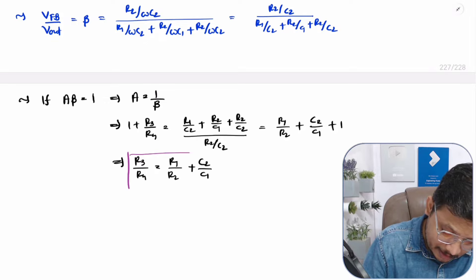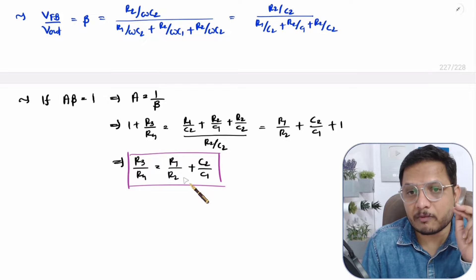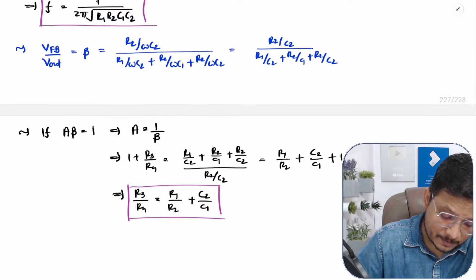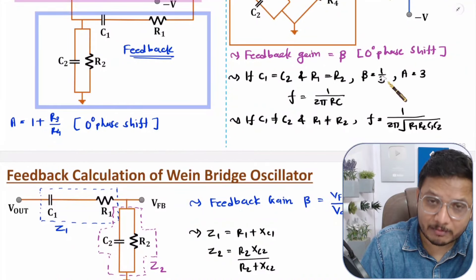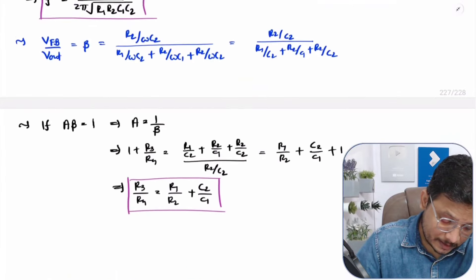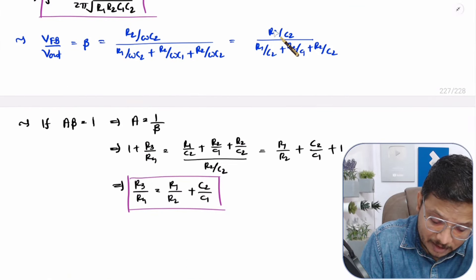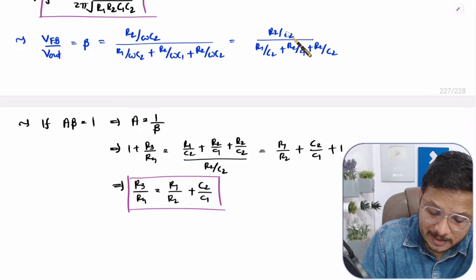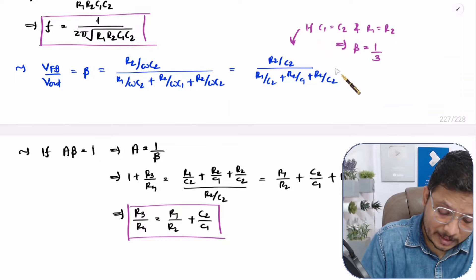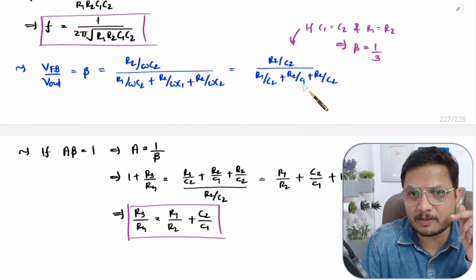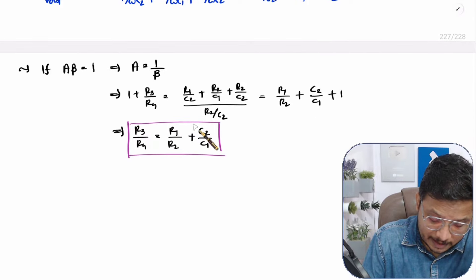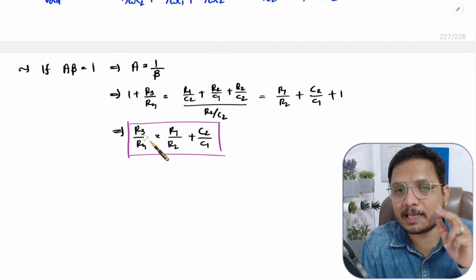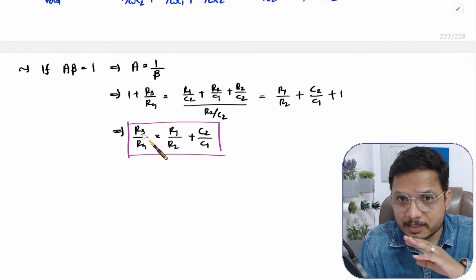If C1 equals C2 and R1 equals R2, then beta equals 1 by 3, as derived from these equations. This is the simplified design condition. When designing the Wien Bridge oscillator, you must verify this oscillation condition first. If this condition is satisfied, oscillation can occur; otherwise, oscillation is not possible.